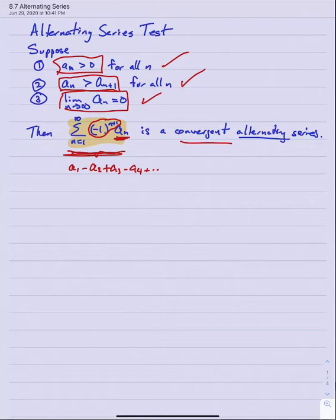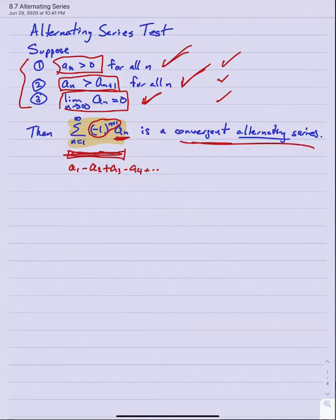Not all alternating series converge, and even if all of these requirements are not satisfied, that doesn't mean the series has to diverge. This is a sufficient condition: if these three things are true, then the alternating series is guaranteed to converge. There are other alternating series that diverge, and if one of these three things is not true, that doesn't necessarily mean the series diverges. The only thing we know for sure is if all three are true, then this alternating series definitely converges.